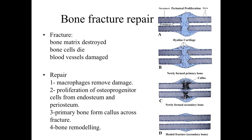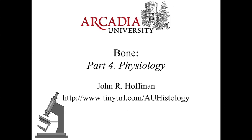This preliminary structure forms a callus — a primary bone that fills the gap and stabilizes things. Then bone remodeling begins: osteoclasts break down the callus and osteoblasts build in its place, replacing the primary bone with true secondary bone. This results in a healed fracture where the bone structure is ideally restored without persistent visible damage at the fracture point.